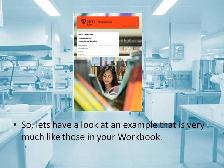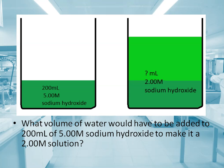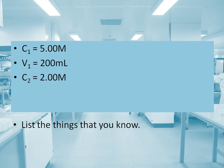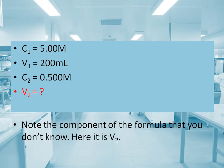Let's look at an example like those in your workbook. What volume of water would have to be added to 250 milliliters of a 5 molar sodium hydroxide solution to make it a 2 molar solution? List the things that you know: C1 is 5, V1 is 250, C2 is 2, and V2 is the unknown component of the formula.